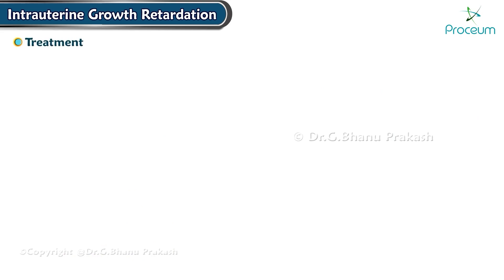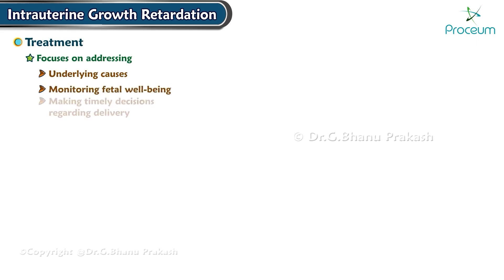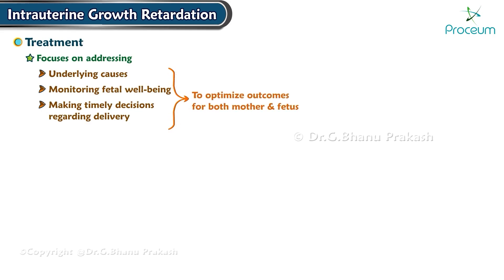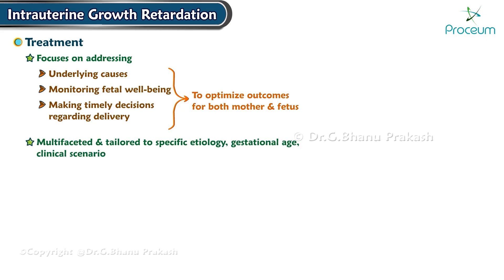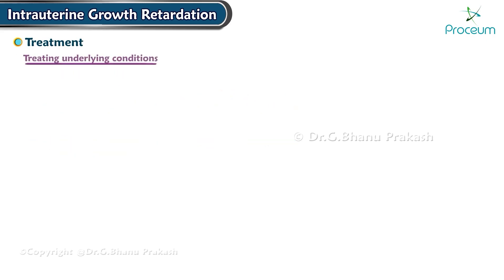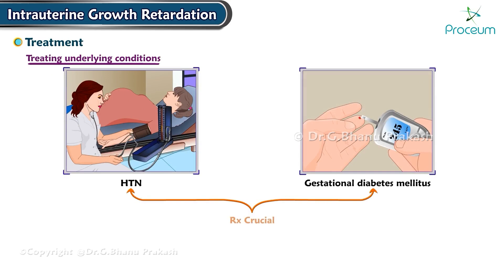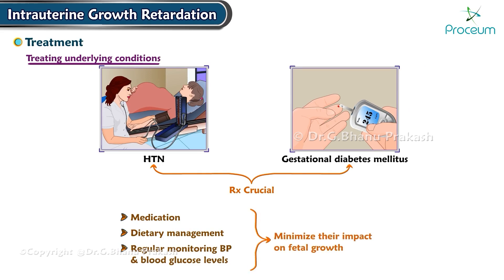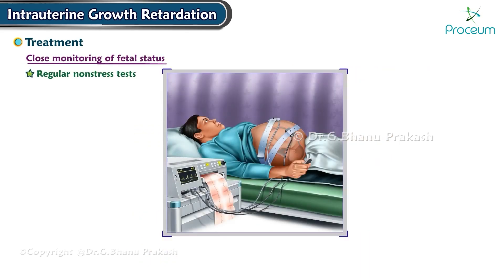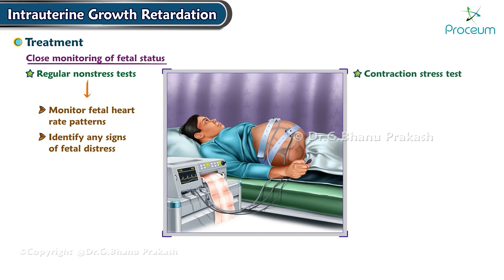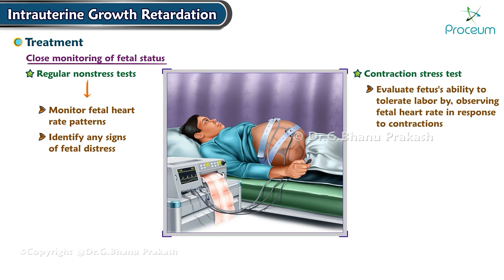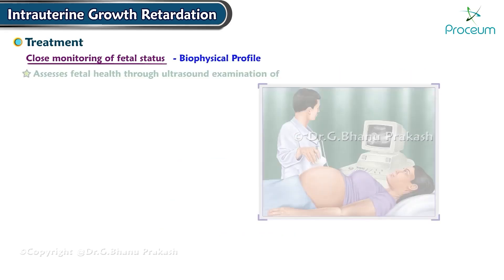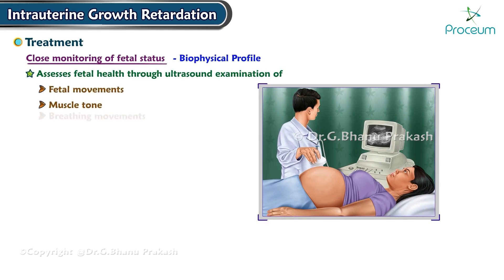Management of intrauterine growth restriction focuses on addressing underlying causes, monitoring fetal well-being, and making timely delivery decisions. Effective control of maternal conditions such as hypertension and gestational diabetes mellitus is crucial, involving appropriate medication, dietary management, and regular monitoring of blood pressure and blood glucose levels. Close fetal monitoring includes regular non-stress tests to identify fetal distress, contraction stress tests to evaluate the fetus's ability to tolerate labor, and biophysical profile assessing fetal movements, muscle tone, breathing movements, and amniotic fluid volume.